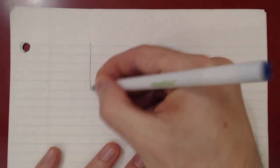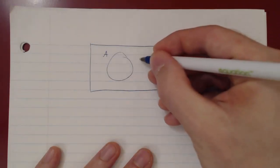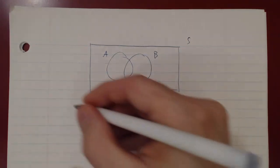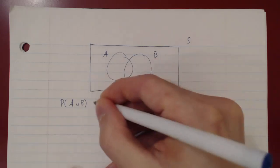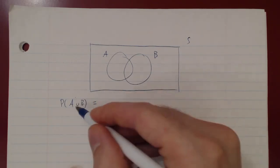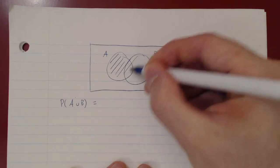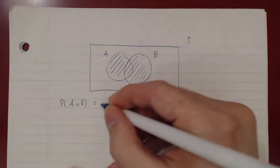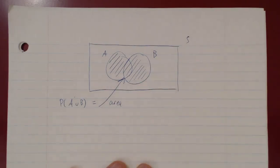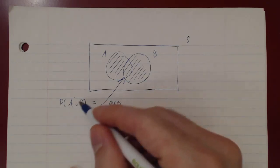The next rule is called the inclusion-exclusion principle. Suppose you consider a Venn diagram with two events, A and B. If you ask for the probability of A union B — the union means you combine A and B together, taking everything in A and everything in B into a larger set. In the Venn diagram, A union B is the area of that combined region. Sometimes you can't find this probability directly, so you express P(A union B) as probabilities of simpler events.